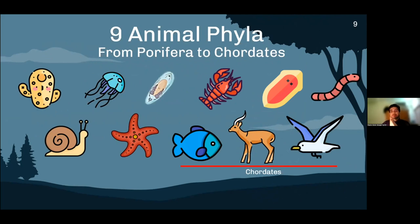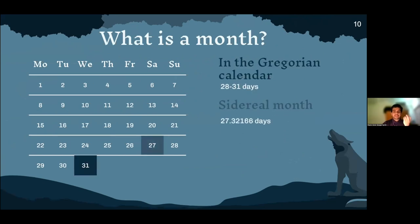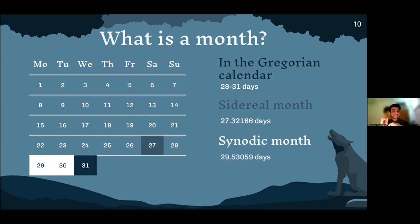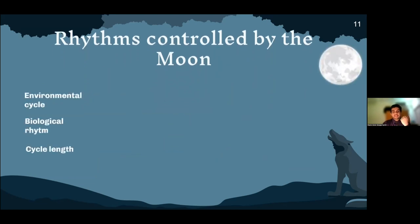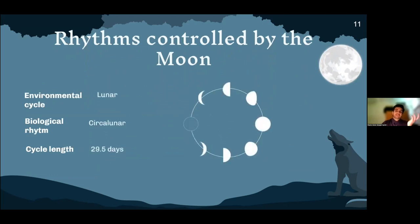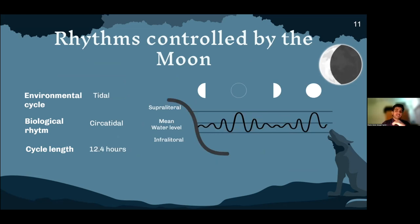But how can we classify these relationships to better understand and study them? First, we have to establish the definition of a synodic month. The synodic month is one that uses the lunar phases as a reference, and it has a duration of 29 to 30 days until the next new moon occurs. From this, we can understand the kinds of lunar biological cycles. The first kind is the circalunar cycle, with a duration of approximately 29.5 days. The second is the semicircalunar cycle, with a duration of 14.8 days. And the third is the circatidal cycle, with a duration of 12.4 hours.